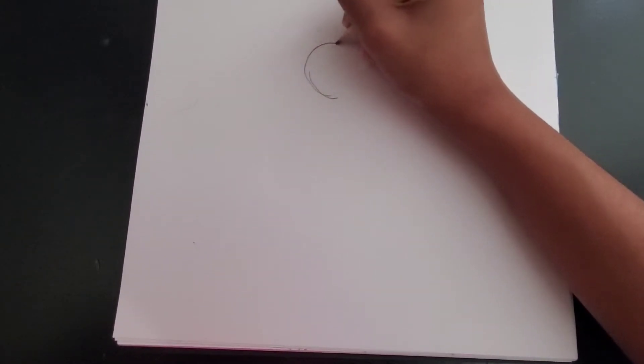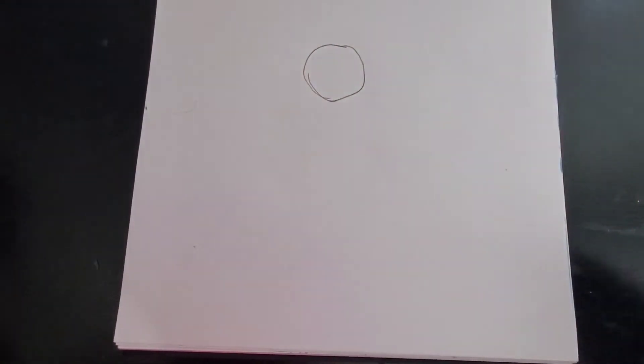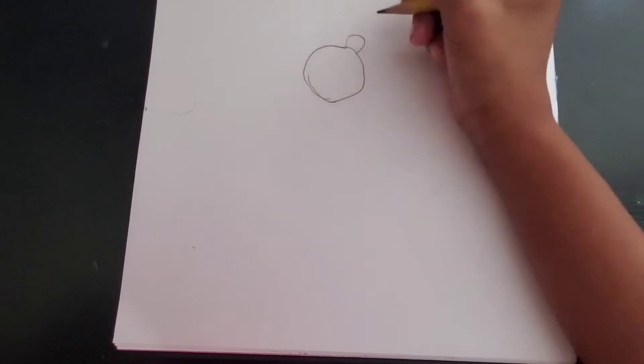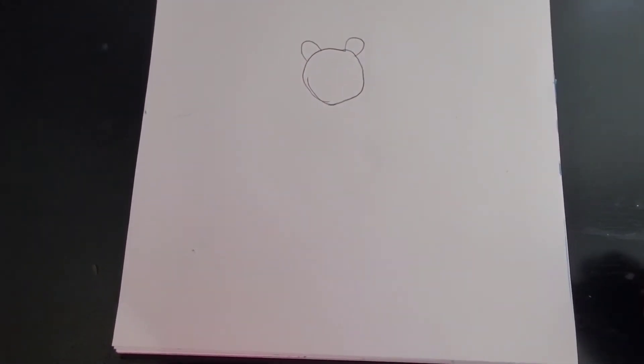So the first step is to draw the mama bear's face which is basically a circle. And then two ears on the right side. That's your first step.